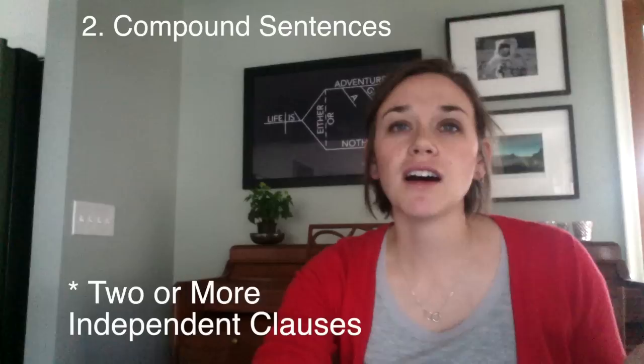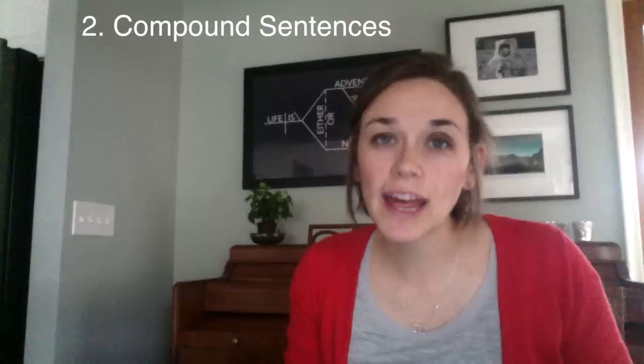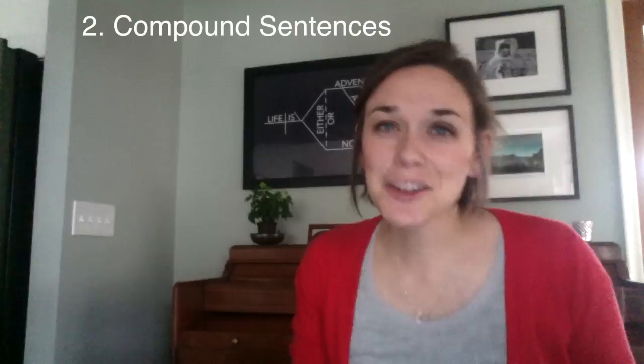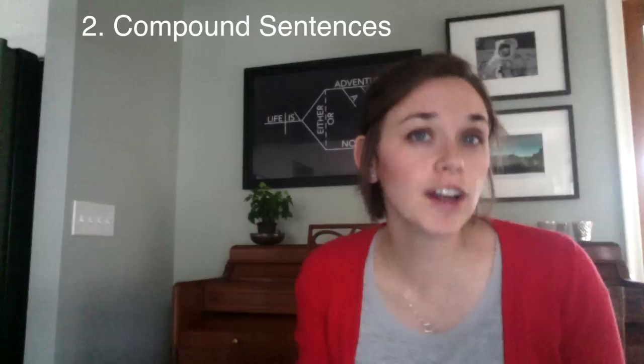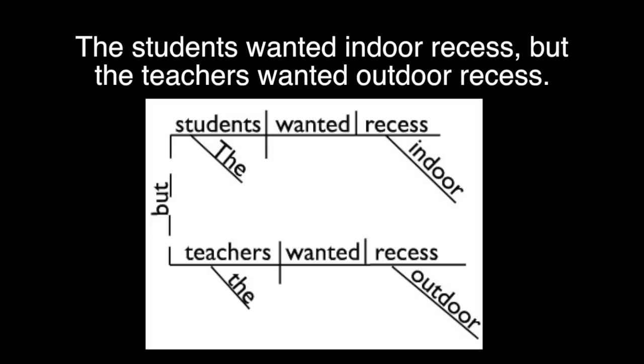Compound sentences are sentences that are made up of two or more independent clauses. Here's an example: 'The students wanted indoor recess; the teachers wanted outdoor recess.' Notice we have a semicolon between the two clauses — that's one way you can punctuate a compound sentence, and that's totally legit. Another way you can punctuate compound sentences is with a comma and a coordinating conjunction — words like 'and,' 'but,' 'for,' 'nor.' Here's an example: 'The students wanted indoor recess, but the teachers wanted outdoor recess.'